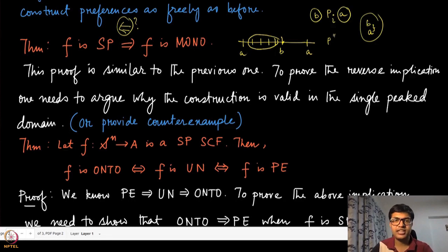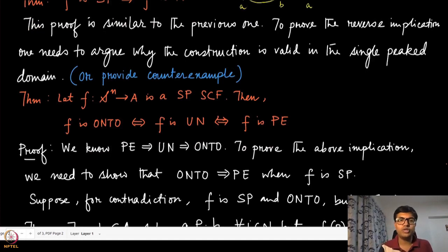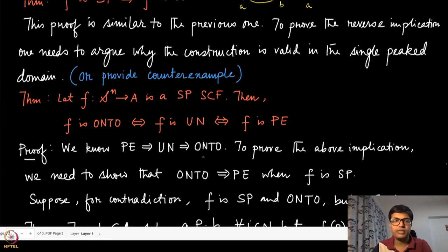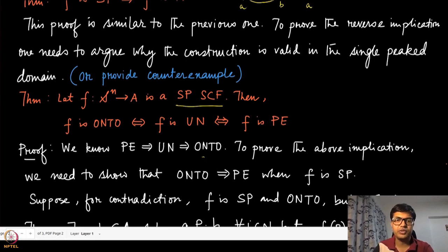The next result concerns ontoness, unanimity, and Pareto efficiency. As before, Pareto efficiency is the strictest notion and implies unanimity and ontoness. The question is whether, under the condition that f is strategy-proof, ontoness implies unanimity and unanimity implies Pareto efficiency. Showing the reverse direction requires some work, especially because in the single-peak domain we must account for the restriction on preferences.